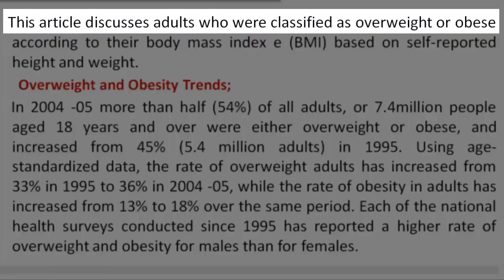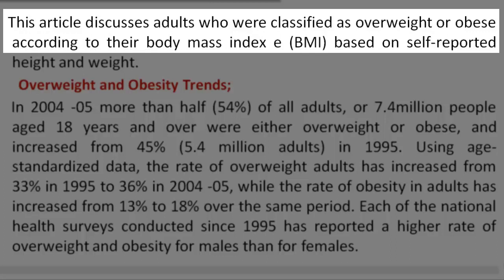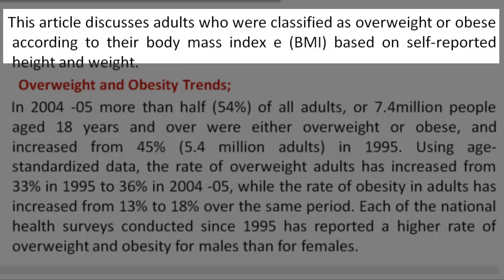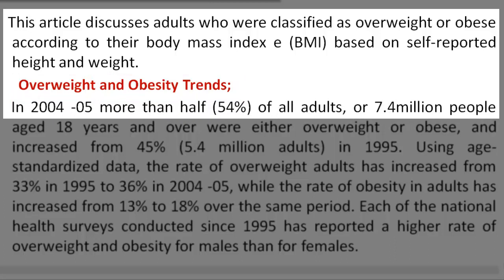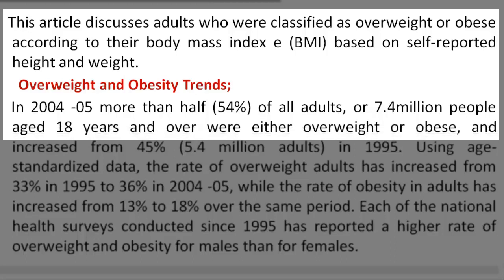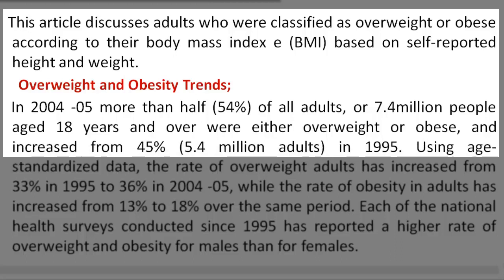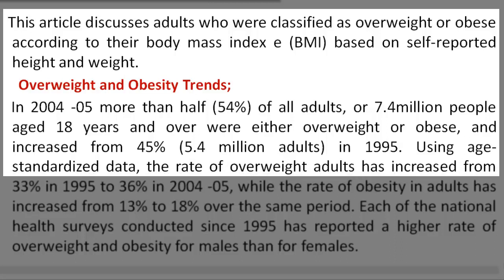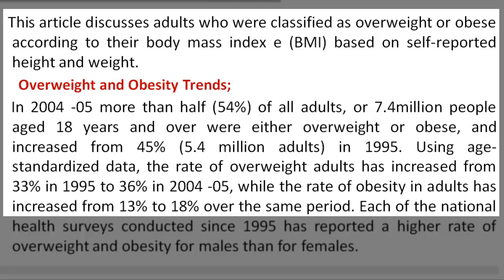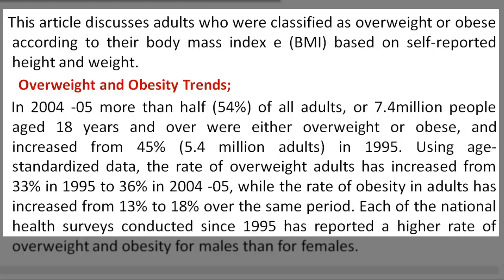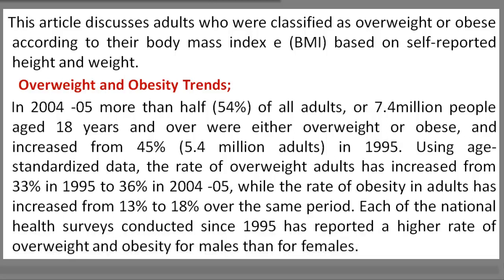Reading 3. This article discusses adults who were classified as overweight or obese, according to their Body Mass Index (BMI), based on self-reported height and weight. Overweight and obesity trends: In 2004 to 2005, more than half — 54% — of all adults, or 7.4 million people aged 18 years and over, were either overweight or obese, an increase from 45% (5.4 million adults) in 1995. Using age-standardized data, the rate of overweight adults increased from 33% in 1995 to 36% in 2004 to 2005, while the rate of obesity in adults increased from 13% to 18% over the same period. Each national health survey conducted since 1995 has reported a higher rate of overweight and obesity for males than females.